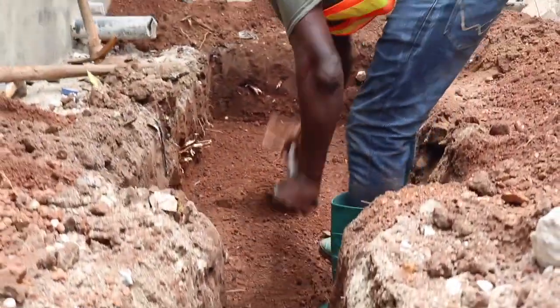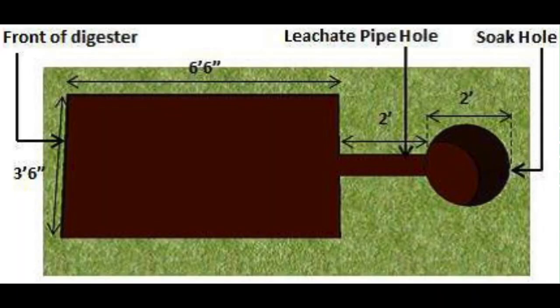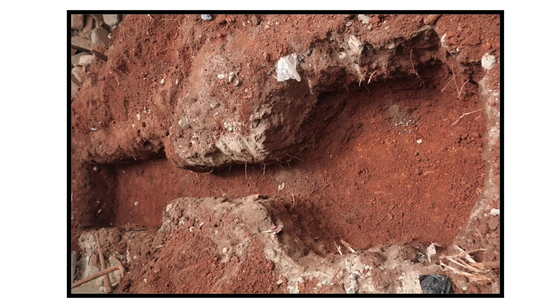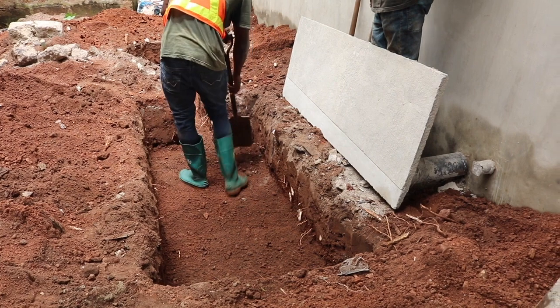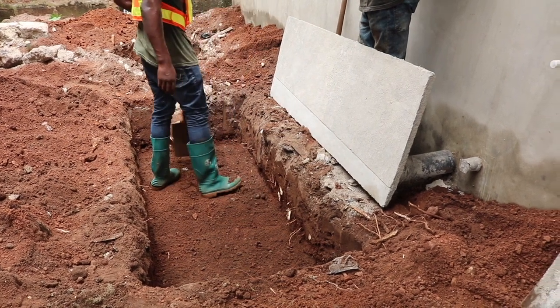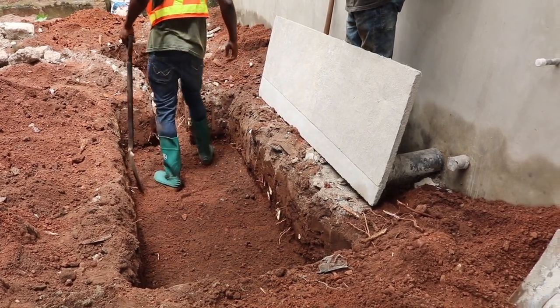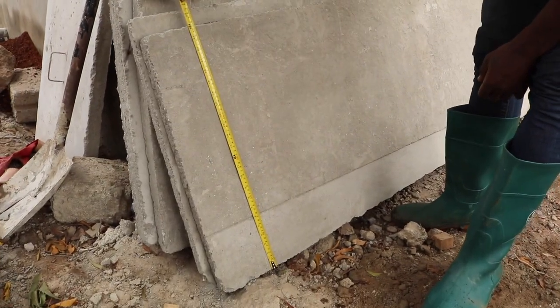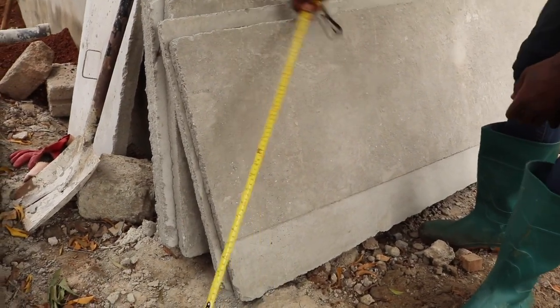From your site marking and digging, you are trying to achieve a shape like this — a rectangular shape for the digester and then a circular shape for the so-called pit. The digester can range from five feet in length and two to three feet in breadth or width, with a depth of up to two and a half feet.